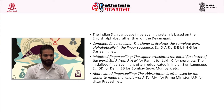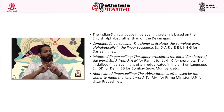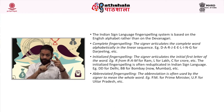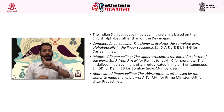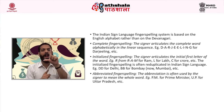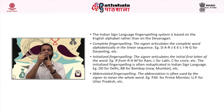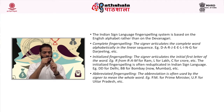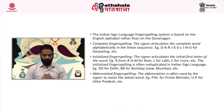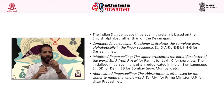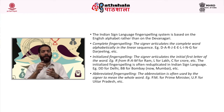There are different ways to fingerspell a word. The first way is complete fingerspelling, where the signer articulates the complete word alphabetically in linear sequence. The second is initialized fingerspelling, where the signer articulates only the initial first letter of the word — for example, L for lakh, C for crore. The third form is abbreviated fingerspelling, where the abbreviation is used to mean the whole word — for example, PM for prime minister or UP for Uttar Pradesh.